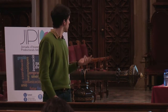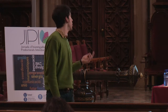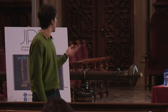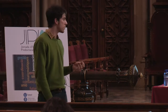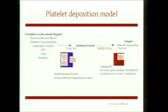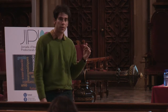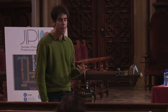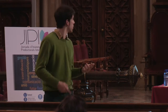To summarize what we do: we had a set of variables — heparin, the platelet concentration, the tissue substrate, the hematocrit, the time, and the stenosis — and we use these to train the random forest with a dataset. Then, using only the input variables, we predict the level of platelet deposition.